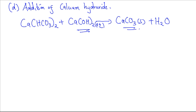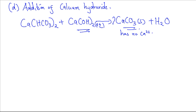After adding calcium hydroxide, an insoluble salt is formed that has no calcium ion. Balancing the equation, we have a coefficient of two on each side; the calcium hydrogen carbonate is aqueous and the equation is balanced.